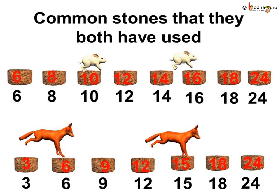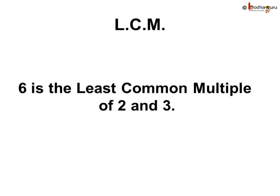Which is the very first stone where they could have met by jumping in multiples of 2 and 3? Look, here 6 is the very first place they could have met by jumping by 2's and 3's. We can say, 6 is the lowest common multiple of 2 and 3.